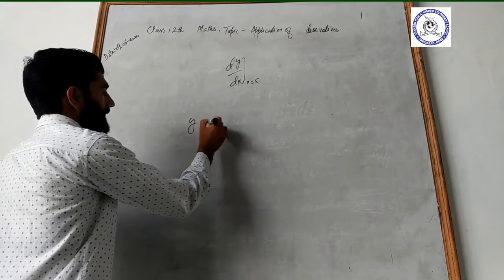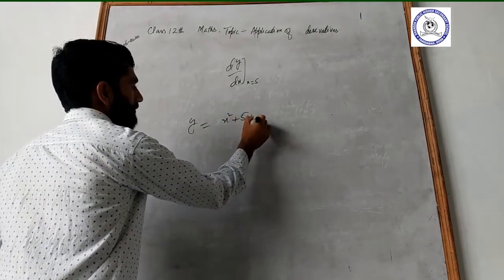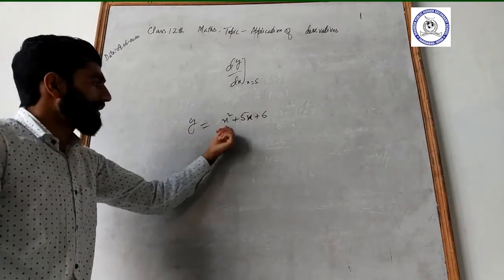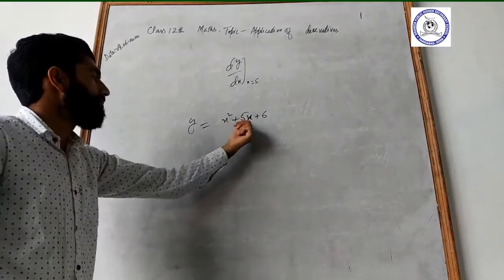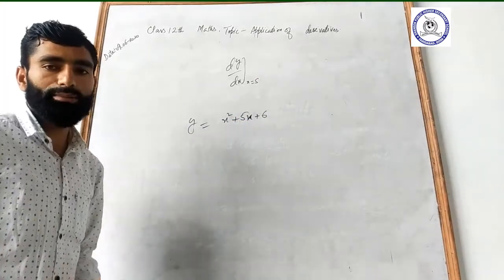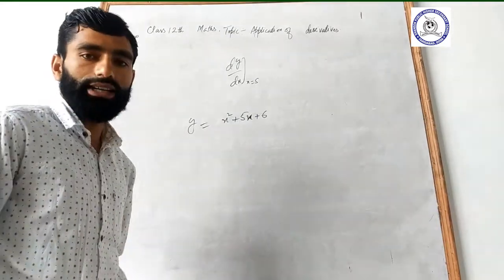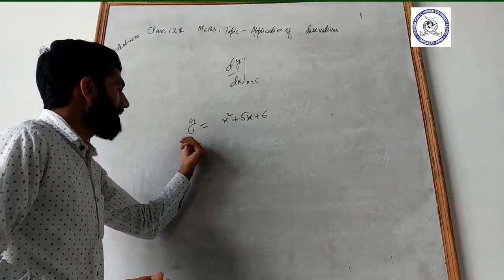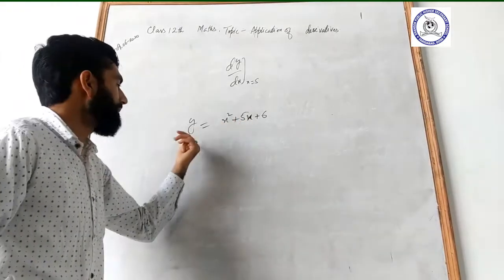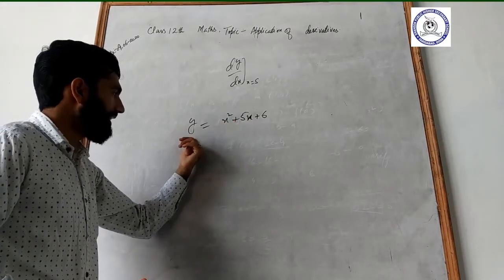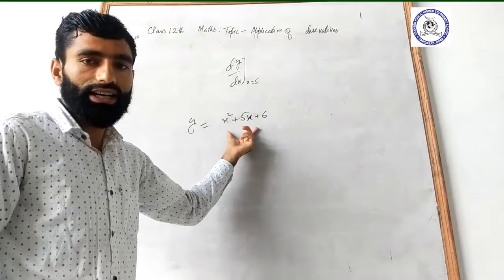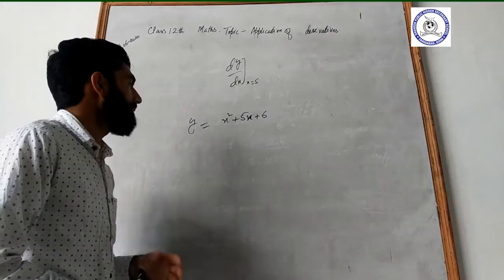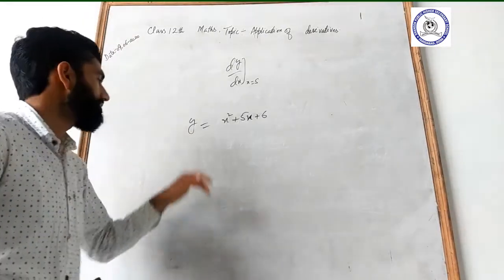For example, if y equals x squared plus 5x plus 6, here y depends on x. The parameter is x — the variable on which y depends. So x is the parameter of y, and we differentiate y with respect to x.